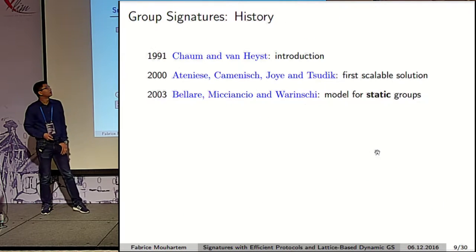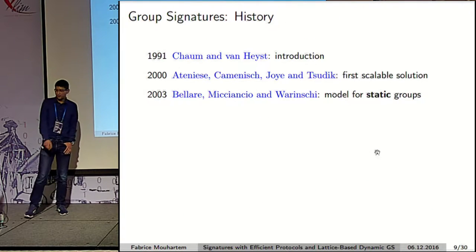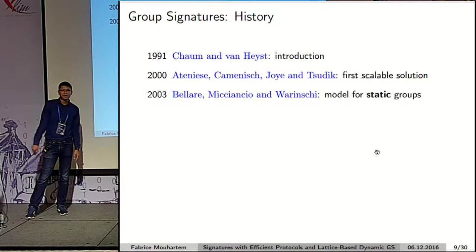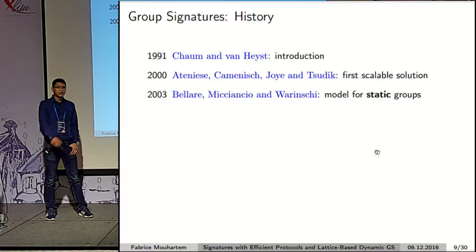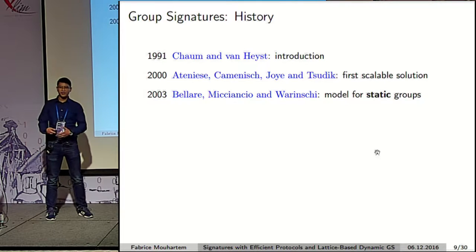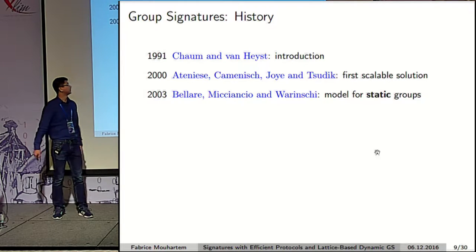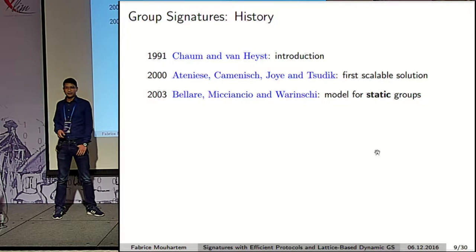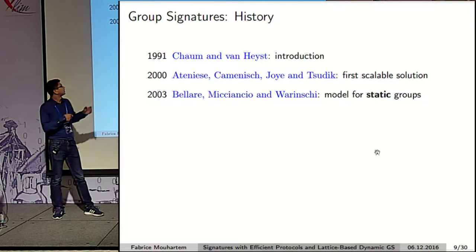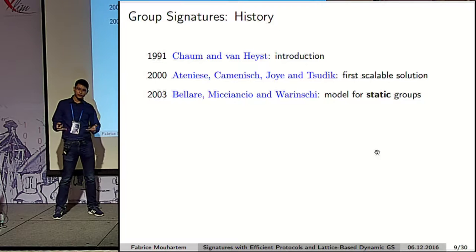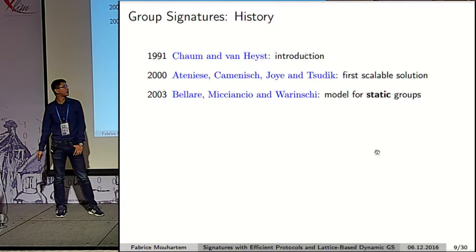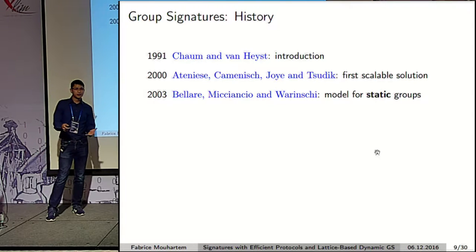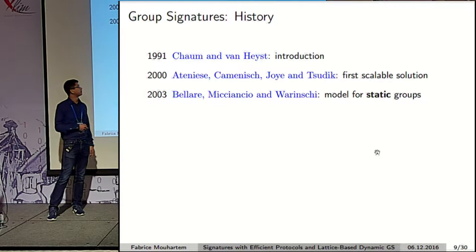A quick overview of the group signature history: it was introduced in 1991 by Chaum and van Heyst. We had to wait until 2000 before having the first scalable and secure solution. Since the introduction by Chaum and van Heyst, there were many different security definitions, which were unified in 2003 by Bellare, Micciancio, Warinschi, who proposed a model that implies all previous security notions.